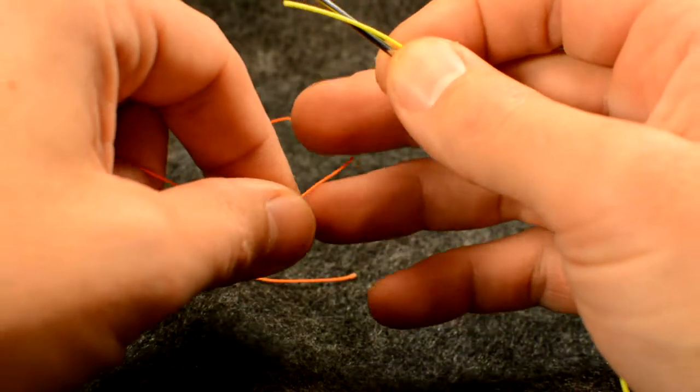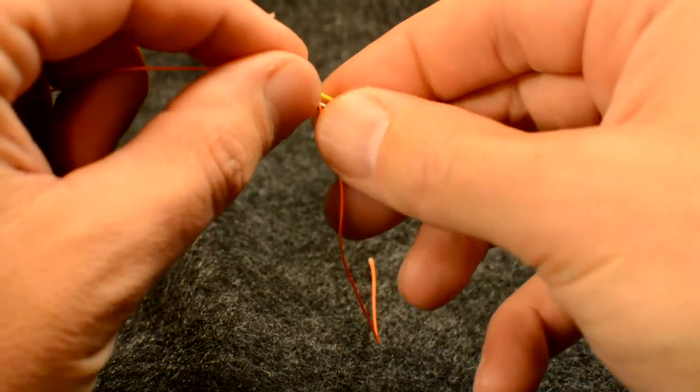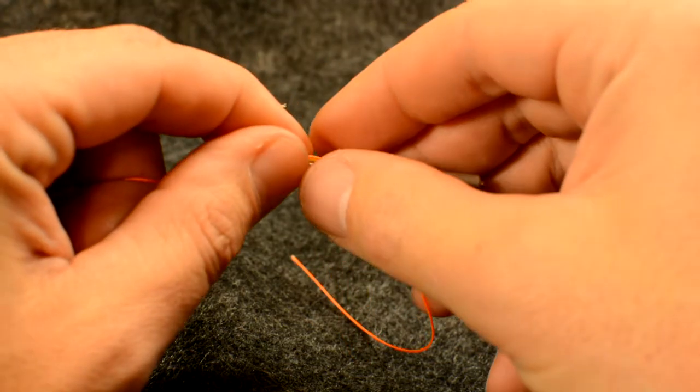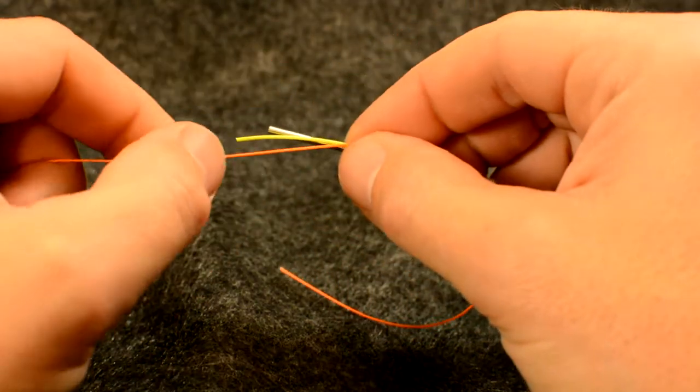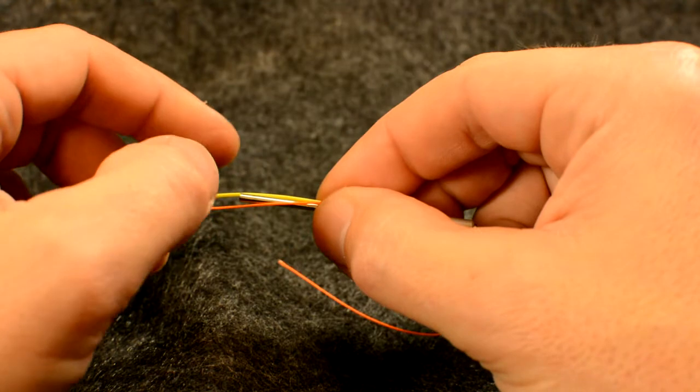Lay the backing next to the fly line facing the opposite direction. Secure both materials with your thumb and your forefinger.